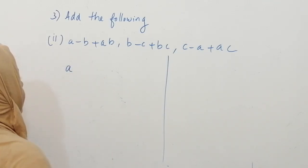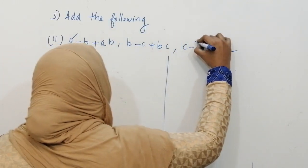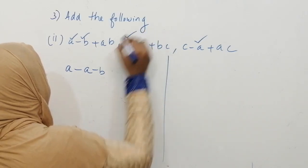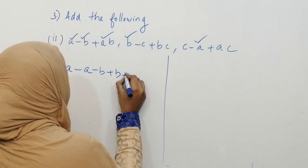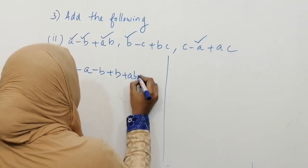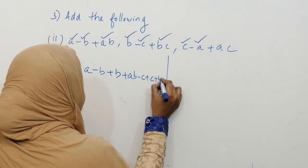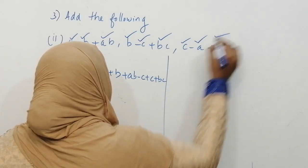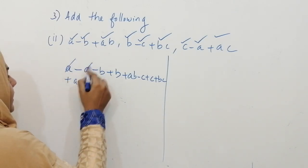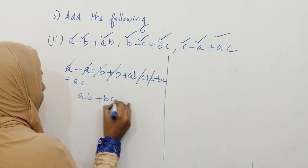Writing a, we look for its like term — minus a. Then minus b, and its like term plus b. Next, minus c and plus c. Then plus bc — nothing like it here — and plus ac. Now solving: a minus a is 0, minus b plus b is 0, minus c plus c is 0. What remains is ab plus bc plus ac, which is the answer.